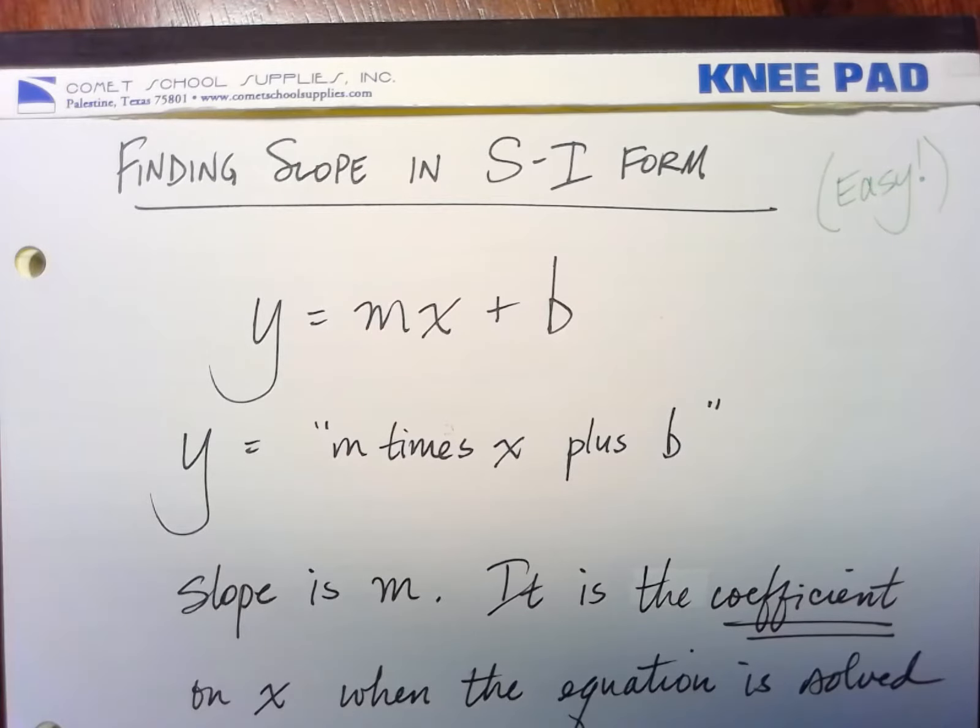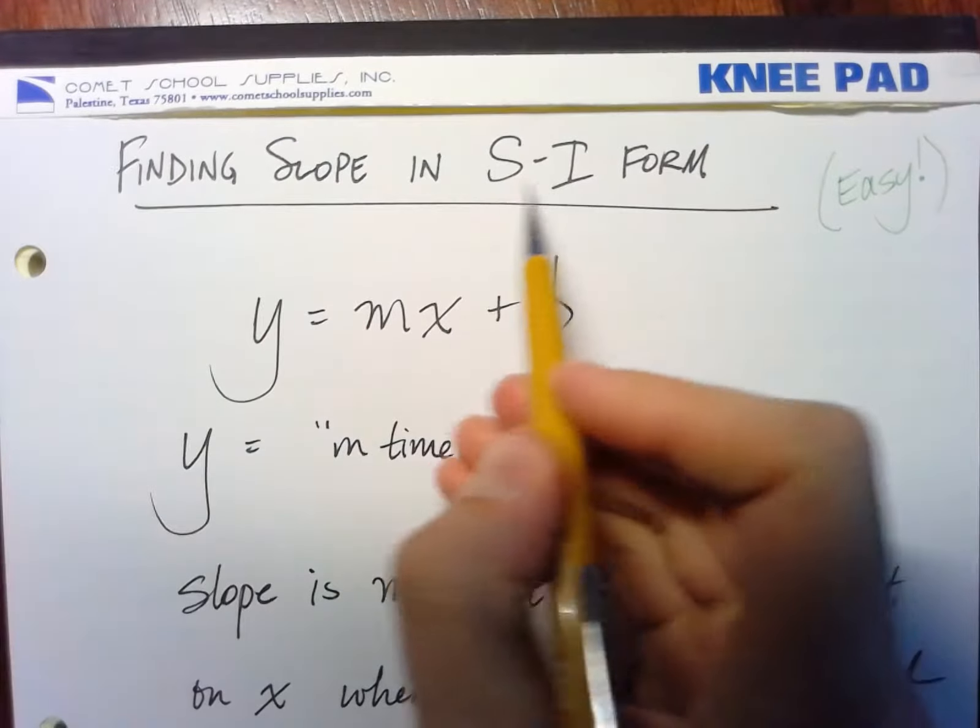So now that we've learned about the three forms of lines, we're going to look at slope-intercept first.